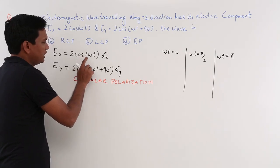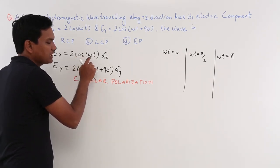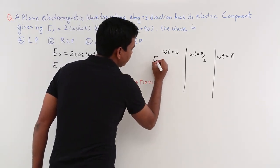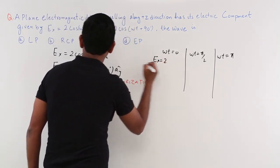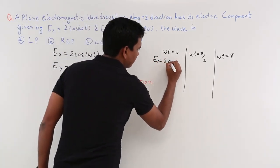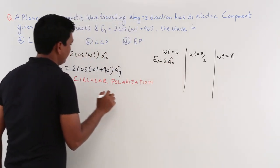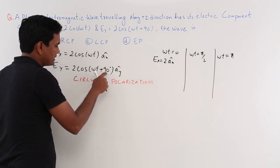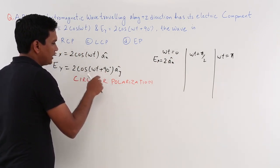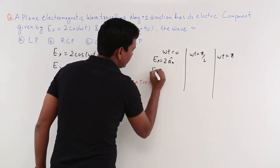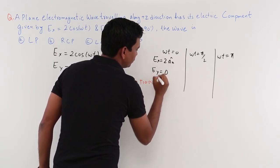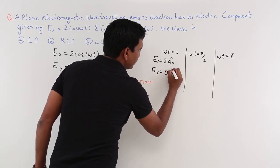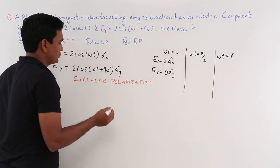When we put ωt = 0: cos(0) = 1, so Ex = 2x̂. For Ey, ωt = 0 gives 0 + 90°, so cos(90°) = 0, meaning Ey = 0 along the y-axis.